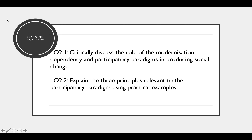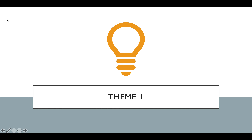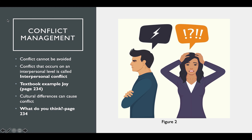Let's get started on page 234. We start with conflict management. I know you think you can, but you can't avoid conflict. Conflict occurs on an interpersonal level between you and another person, but it's something that we're going to have to deal with one way or another.